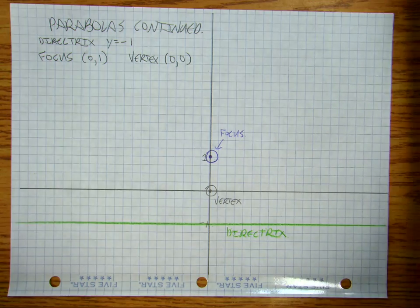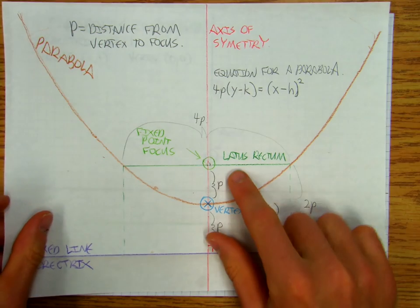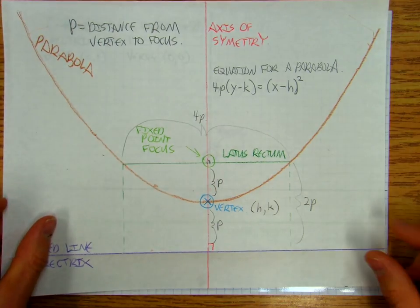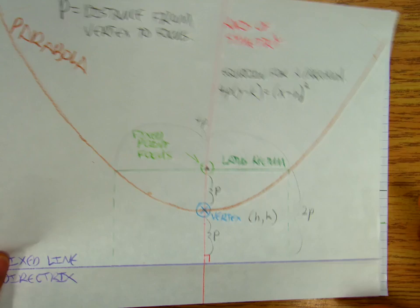Now, this key here, this latus rectum, this is really, really, really important. Because what this says is that, basically I take this distance here,